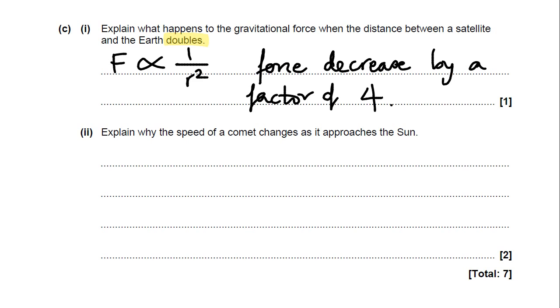Explain why the speed of a comet changes as it approaches the Sun. It's part of part C again, talking about the same idea: how the force changes with distance. As it gets closer to the Sun, how is the force going to change? And therefore, how is the speed going to change? I'll give you a moment to have a go. Remember, it's a two marker.